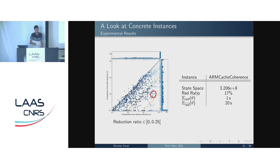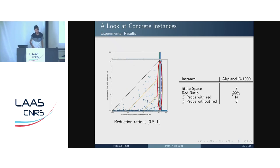Looking at concrete instances: for the AMCACH-CORES model with a state space of about 300 million states and a reduction ratio of about 70%, the mean computation time with reductions is about 1 second versus 20 seconds without — a speedup of 20. For the ALD-1000 airplane model with an unknown state space but a 99% reduction ratio, using reductions we compute 14 properties, whereas without reductions we cannot compute any.